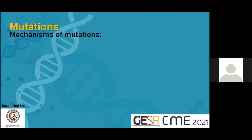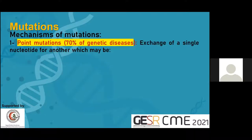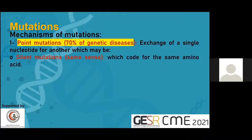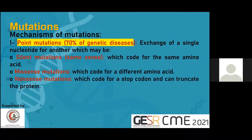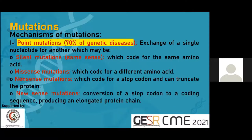The mechanisms of mutation may be one of two. First, point mutations, which represent 70% of genetic diseases. There is an exchange of a single nucleotide for another, which may be a silent mutation leading to coding for the same amino acid. Or it may be a missense mutation, which codes for a different amino acid and may lead to pathology. Or a nonsense mutation, which codes for a stop codon and can truncate the protein, resulting in a defective protein. Or a readthrough mutation, which converts a stop codon to a coding sequence, producing an elongated protein.